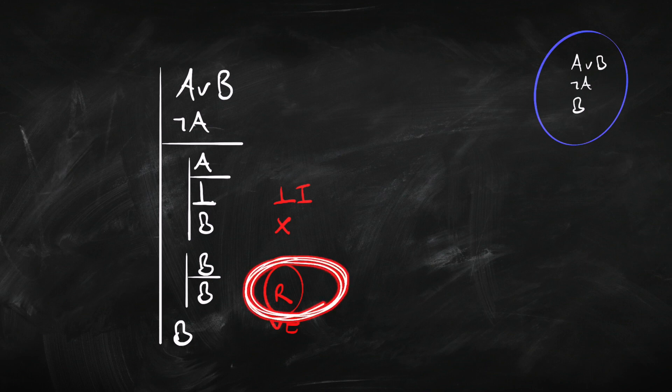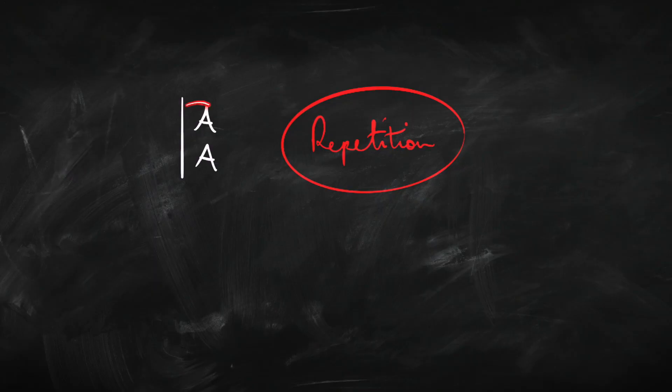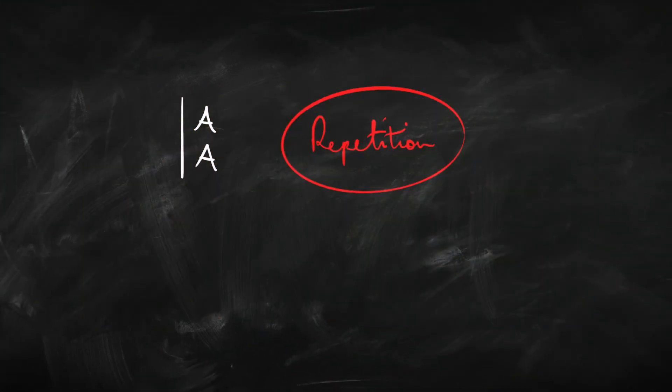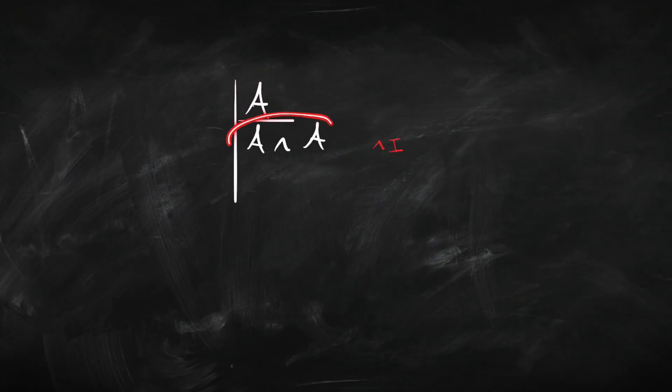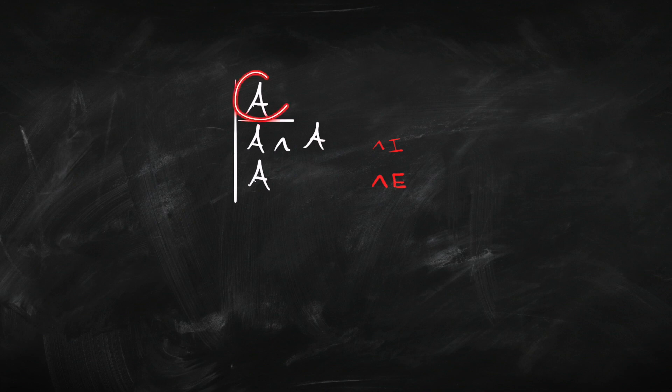I used this rule called repetition, but that isn't actually one we've seen yet, so we'd better show we can derive it. Here's the rule — it basically allows us to repeat something within a proof. It's pretty simple to derive, so why not pause the video, see if you can do it, come back when you're done and see if your answer matches mine. Here's how I did it: we start off assuming A. I want to end up with A, but I can't use repetition since that's what we're trying to derive. Well, I've got A as a premise so I can infer A and A — that's an okay use of the and-introduction rule. And having done that, I can then eliminate 'and' to get A. So from A to A via conjunction introduction and then elimination.